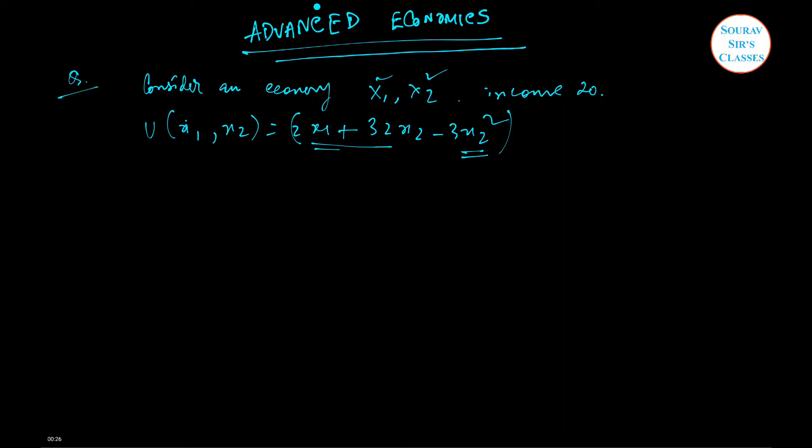The utility function is quasi-linear type. It is called quasi-linear because with respect to x1 it is linear, and with respect to x2 we have a linear part and a nonlinear part as well. Now the first question is, given that the price of x1 and price of x2 are equal and both equal to 1, what is the optimal consumption bundle?